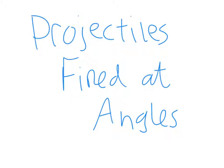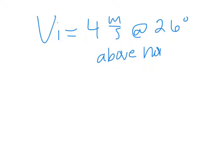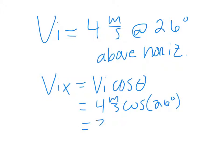That's really the only difference when it comes to projectiles being fired at angles. Whenever you're given the initial velocity — let's say an initial velocity of 4 meters per second at 26 degrees above the horizontal — to find the x component, vix equals vi times the cosine of the angle. So this will be 4 m/s × cos(26°) = 3.59 meters per second.